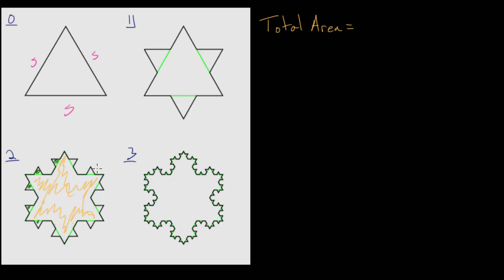And then for step 3 we have everything from step 2, but then we're adding in these tiny new equilateral triangles here. And if you count them up or if you just follow the logic that we'll go through, there's 48 of those.